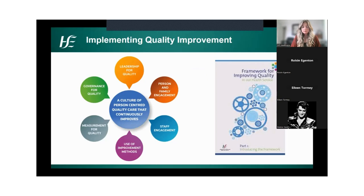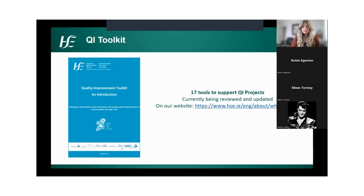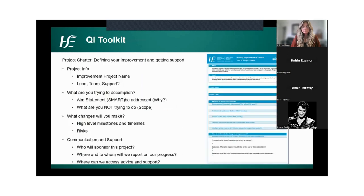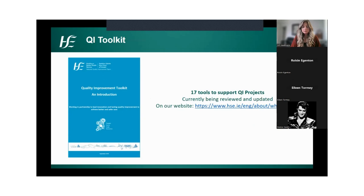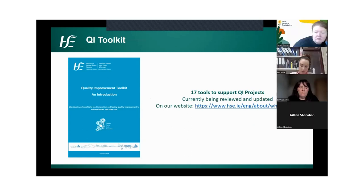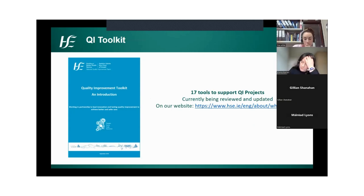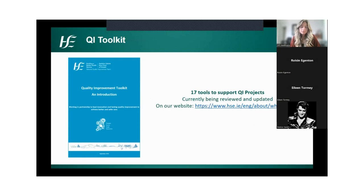To implement quality improvement, we use the framework for improving quality, published by our team a number of years ago. It has six drivers that can help direct you in making improvement in your services, based on international models and evidence as well as local improvement experience tested in a number of hospitals. We also have our quality improvement toolkit on our website, with 17 tools to support quality improvement projects appropriate for every phase — from that initial light-bulb moment through to testing your idea, evaluating whether it has worked, and spreading and sustaining it if successful. Use the tools as they're applicable to your project; you may not need all 17.